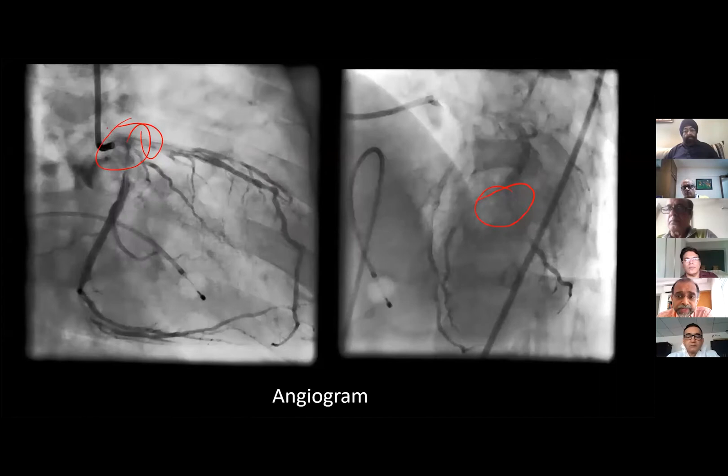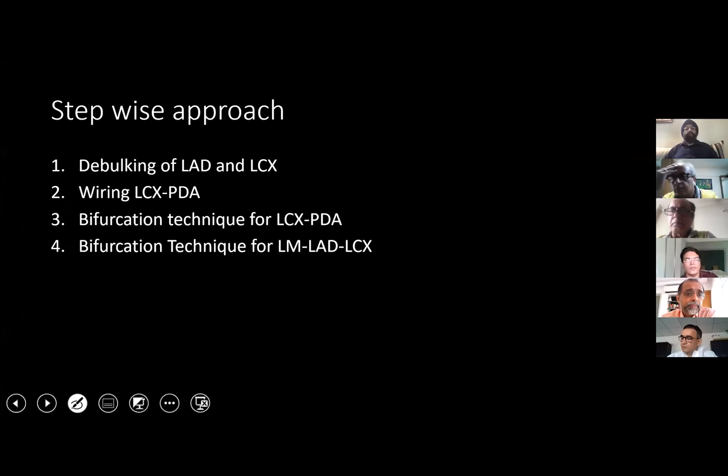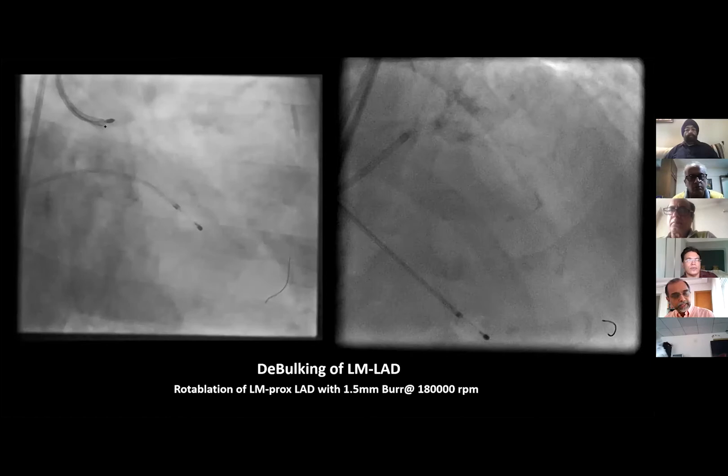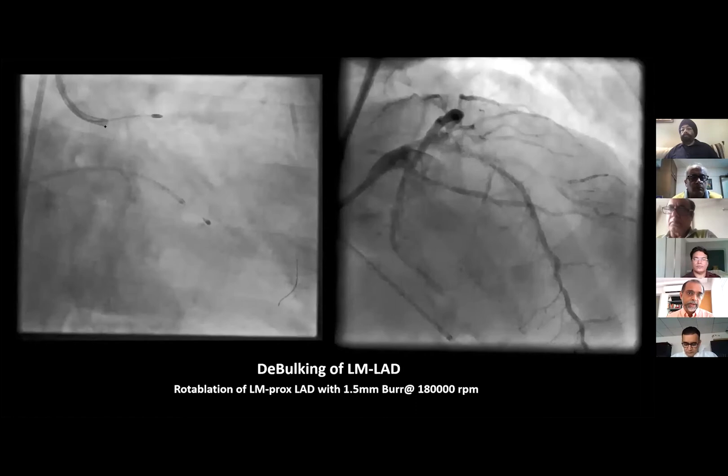We had a stepwise approach. First was debulking of the LAD and the circumflex. Then rewiring the circumflex and the PDA. Then a bifurcation technique for the circumflex PDA, and a bifurcation technique for the left main, LAD, and circumflex. What we did was we first rotablated the most simple vessel — the LAD — because when we rotablate the circumflex, we will have to take out the LAD wire. The LAD was more easily accessible for rewiring in case of an emergency, and that lesion was not so critical. So we rotablated the LAD.